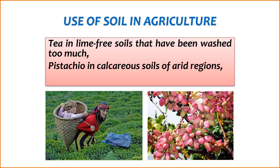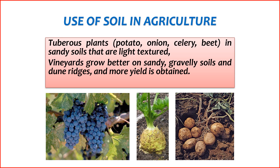Tea is cultivated in lime-free soils that have undergone extensive washing, while pistachios are grown in calcareous soils in arid regions of Turkey. Tuberous plants such as potatoes, onions, celery, and beets thrive in sandy soils with a light texture. Vineyards show better growth in sandy and gravelly soils, including dune ridges, resulting in higher yields.